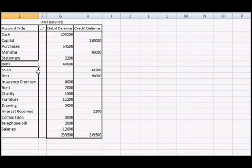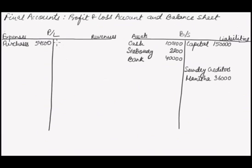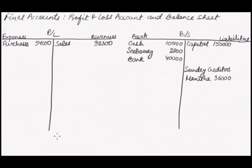Sales is $32,300. Sales is a part of revenue, so it would be incorporated in the profit and loss account. We write Sales, $32,300. Next, the RITU account is also a sundry creditor, so it would be written as RITU, $20,000.